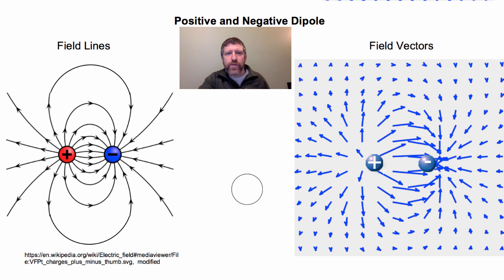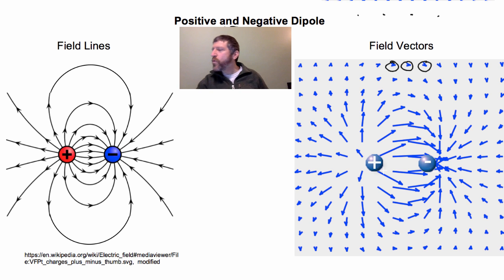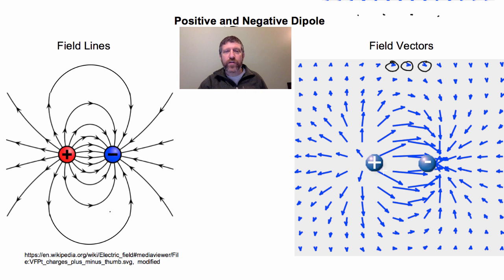Something interesting: as you get farther and farther away from these two charges, the field vectors become very, very tiny. Far away from a dipole, it's like you're looking at a net charge of zero, because that's what it is — a dipole is a positive and negative charge that cancel each other. The field goes down very rapidly, as R cubed, as you get farther away from a dipole, because you're equally far away from the positive and negative charges.